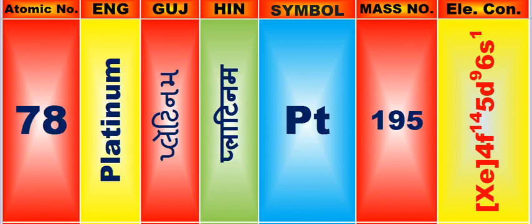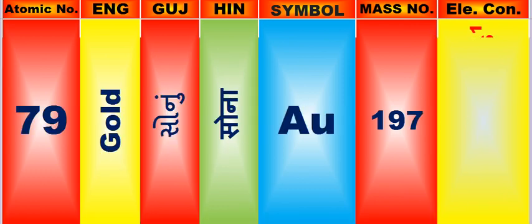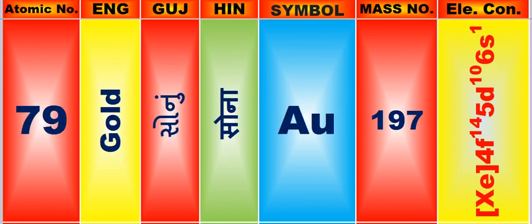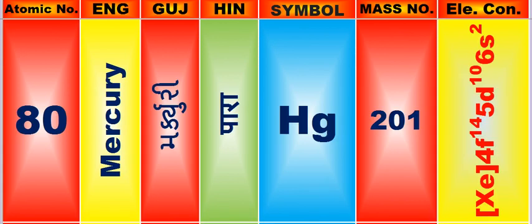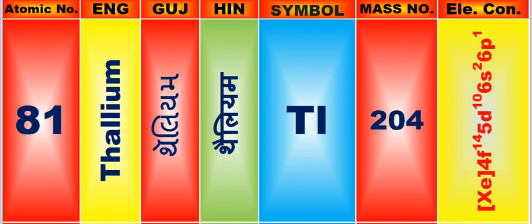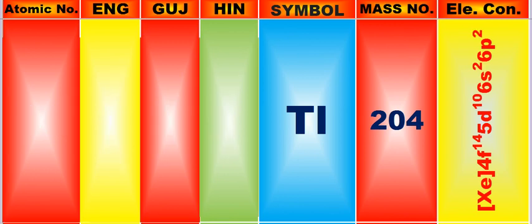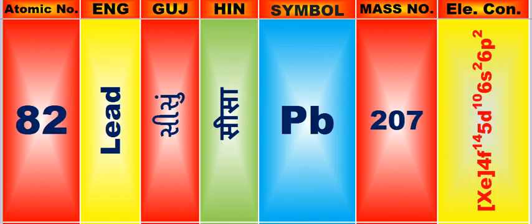Atomic number is 78, name of atom is Platinum. Atomic number is 79, name of atom is Gold. Atomic number is 80, name of atom is Mercury. Atomic number is 81, name of atom is Thallium. Atomic number is 82, name of atom is Lead.